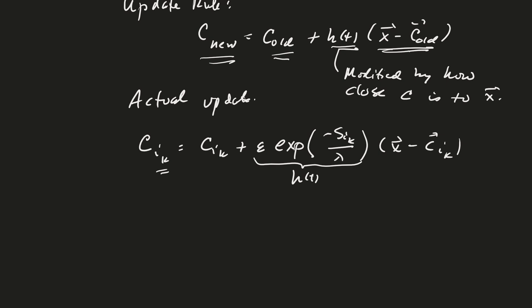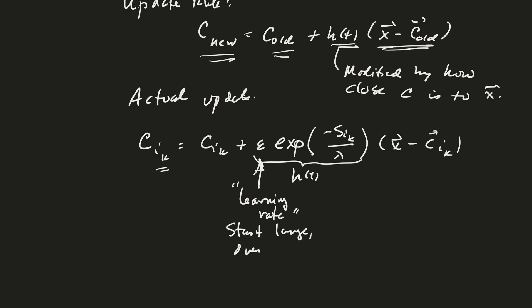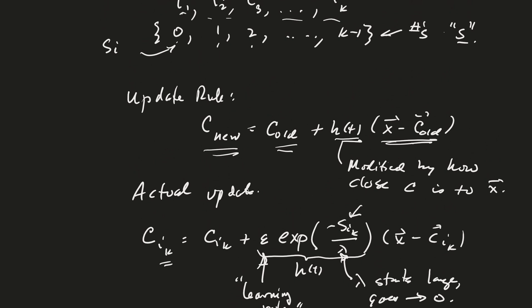So now, what is our Epsilon going to do in our function? This is called the learning rate, and the idea behind that is it's going to start large, and then, over time, go to zero. And similarly, Lambda is going to be the same idea here, Lambda starts large, goes to zero. And then, our SAIK here, remember, those are integers that tell us how close center CI is, or how much, how many centers are closer to C to the X value than the current value is, the current center is.